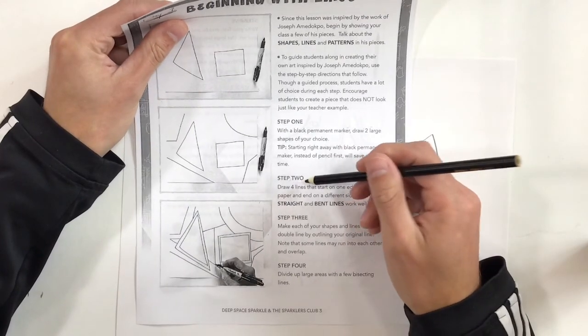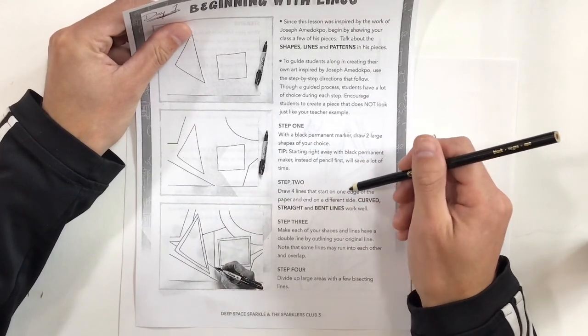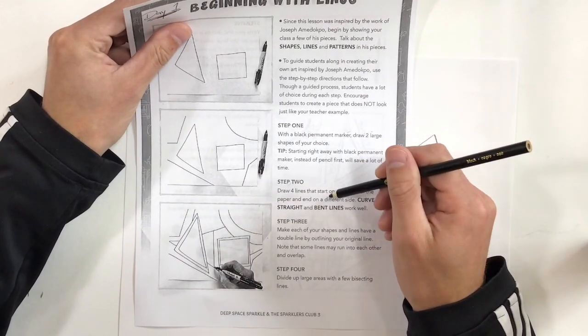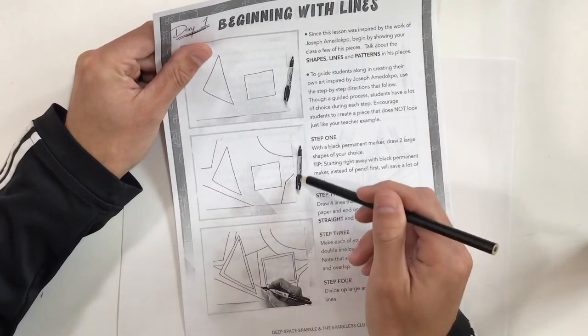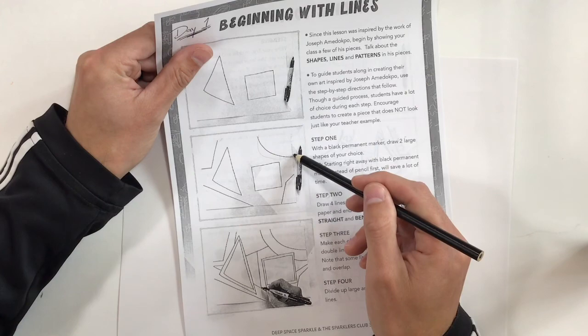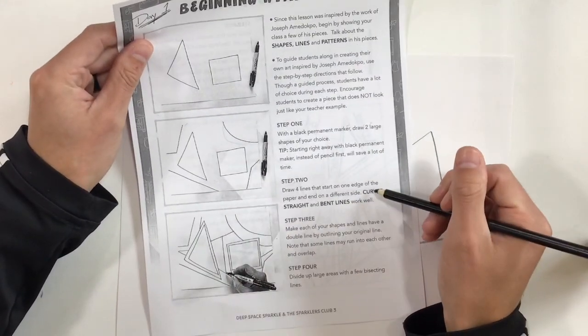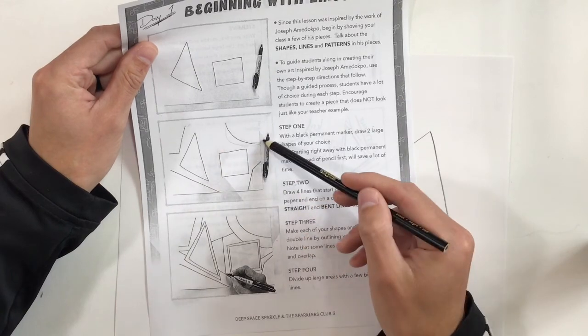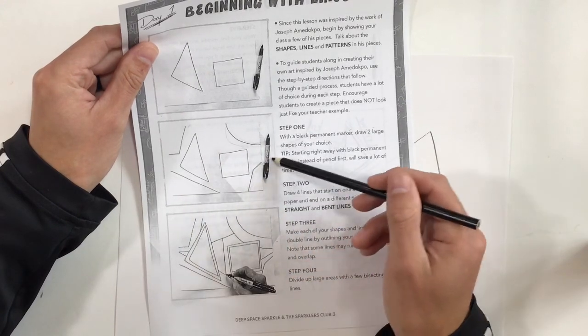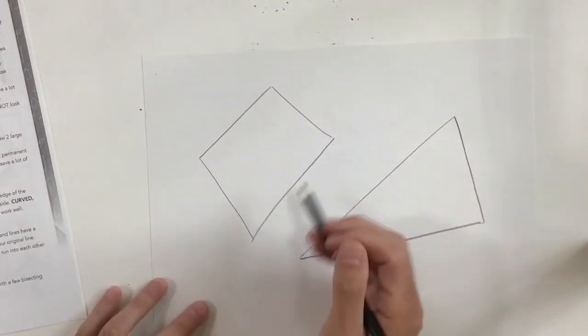Step two is draw four lines that start on one edge of the paper and end on a different side. So you can see kind of their examples, they did one, two, three, four. It says to use curved lines, use straight lines, use bent lines. So there's a curved one, there's a straight one, there's a bent one. It's up to you how you want to do that.